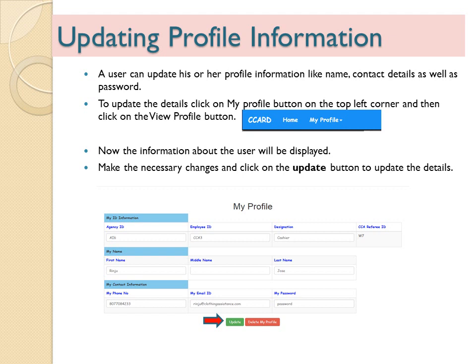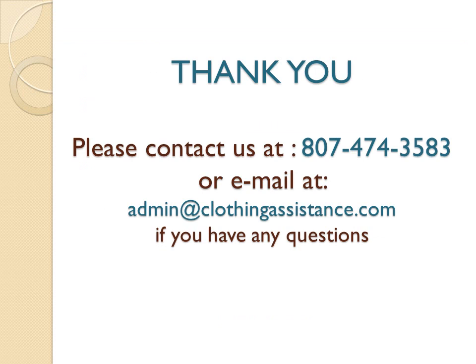Updating Profile Information: a user can update their profile information including name, contact details, and password. To update the details, click on the My Profile button on the top left corner and then click on the View Profile button. The information about the user will be displayed. Make the necessary changes and click on the Update button to update details. Thank you. Please contact us at 807-474-3583 or email at admin@clothingassistance.com if you have any questions.